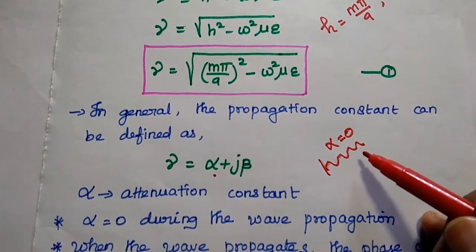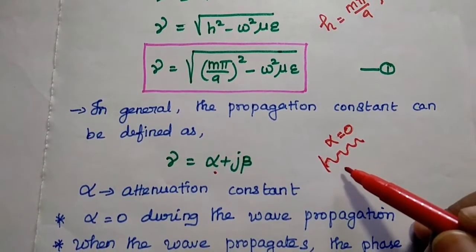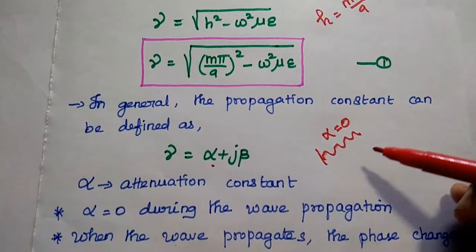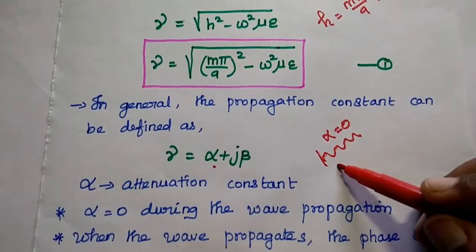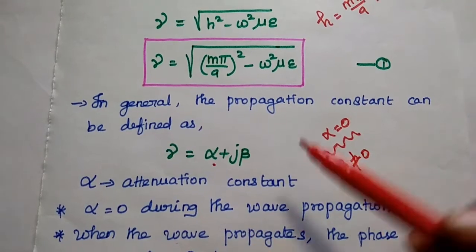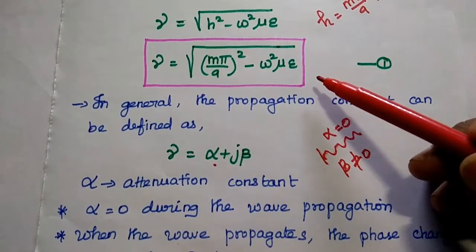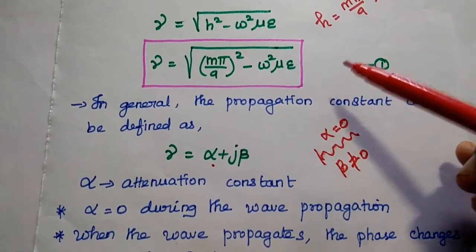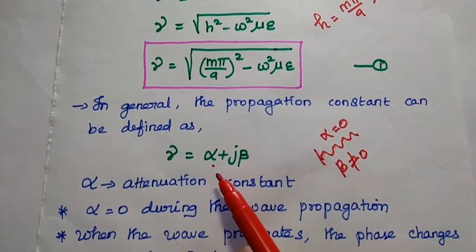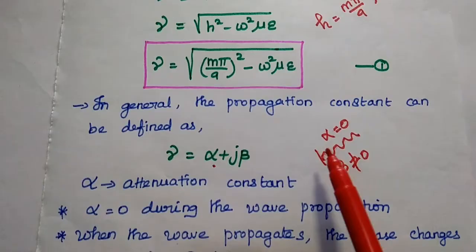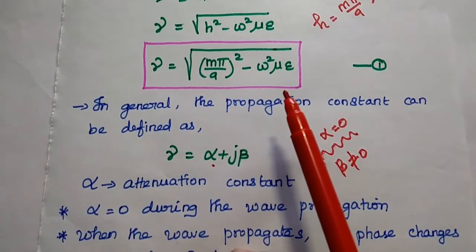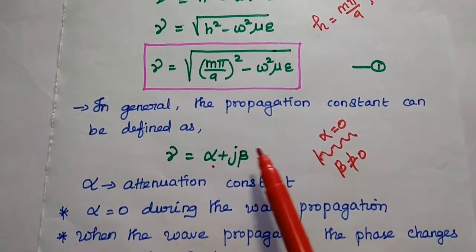During the wave propagation, there is no attenuation. When the wave is propagating, the phase of the wave is continuously changing in the direction of propagation, so the phase shift constant β is not equal to 0. Now we can compare this parameter — the gamma expression for wave propagation between parallel planes — with the general expression α + jβ. If α = 0, we can consider jβ equal to the first equation, from which we can find out the value of β.